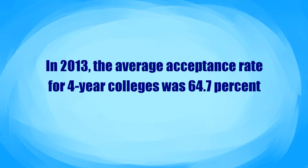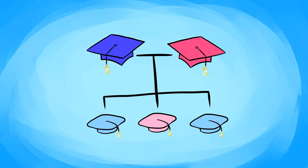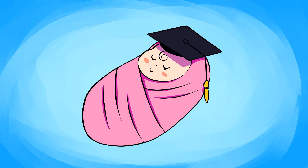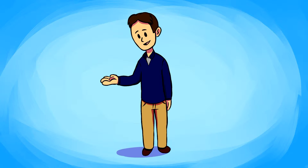Factors that determine a student's acceptance go beyond their application. Family history, location, and income all affect the likelihood that a particular student will be able to enroll and succeed in college. These factors are predetermined by heritage before a student even thinks of writing their first college app.